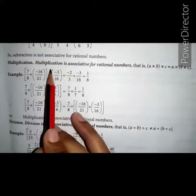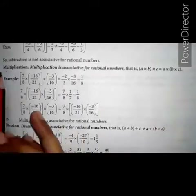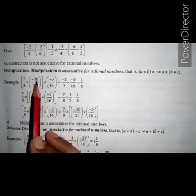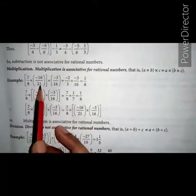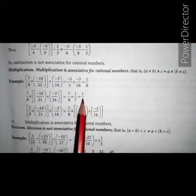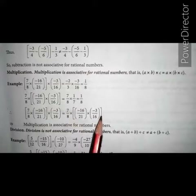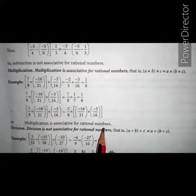For multiplication: multiplication is associative for rational numbers. That is, (a multiplied by b) multiplied by c equals to a multiplied by (b multiplied by c). For example, let a equals to 7 upon 8, b equals to minus 16 upon 21, and c equals to minus 3 upon 16. On solving (a multiplied by b) multiplied by c, we get 1 upon 8. And on solving a multiplied by (b multiplied by c), we also get 1 upon 8. Left hand side equals to right hand side, so multiplication is associative for rational numbers.